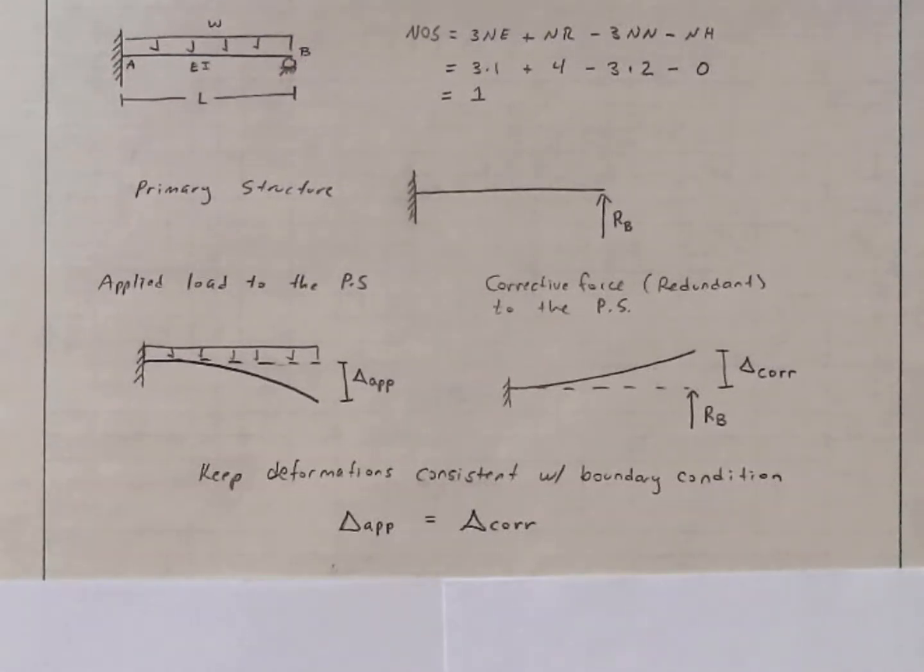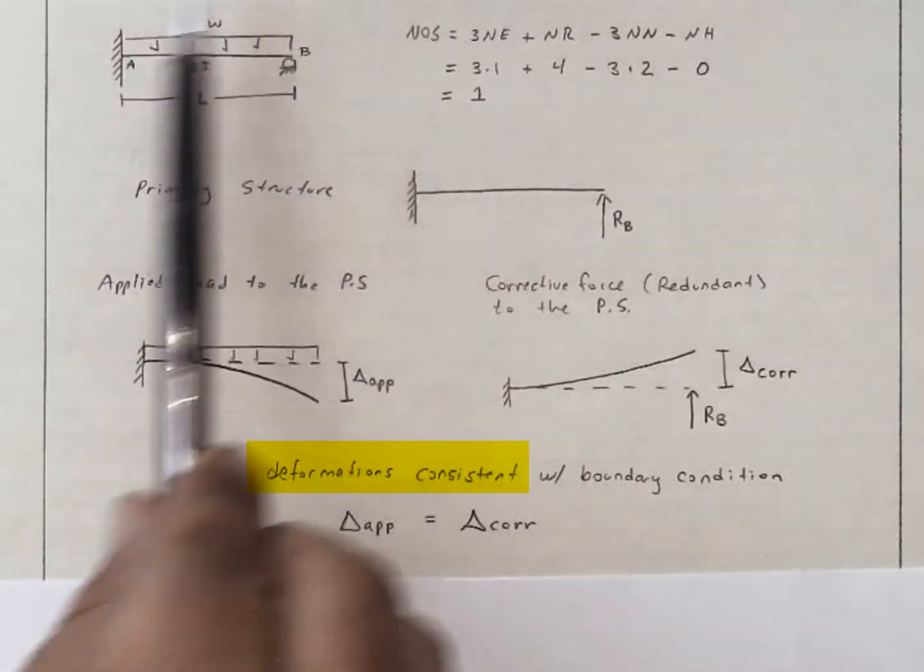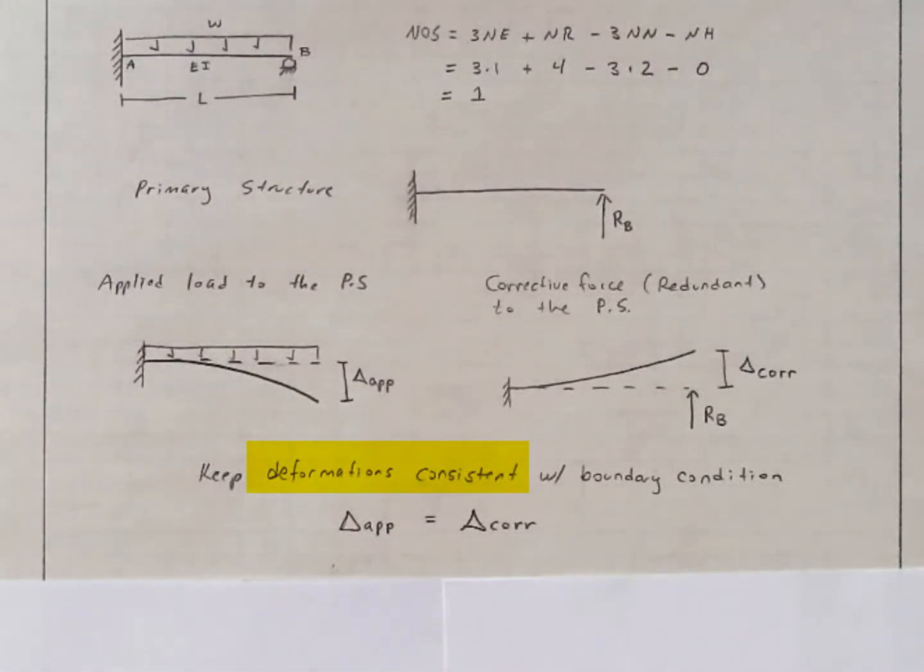So the main task in the flexibility method is to enforce deformations that are consistent with the boundary conditions of the indeterminate structure. That's why sometimes this method is called the method of consistent deformations.